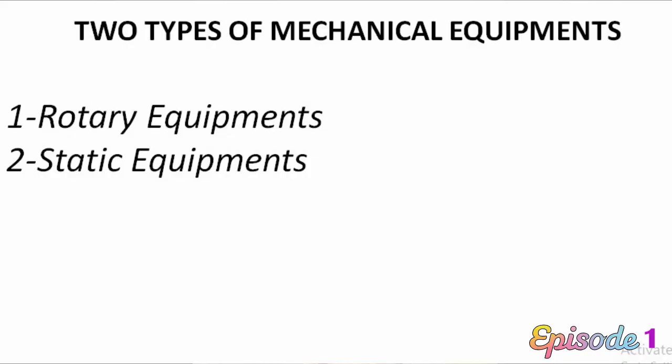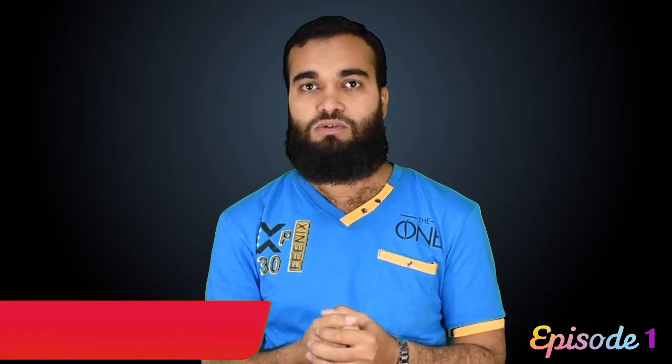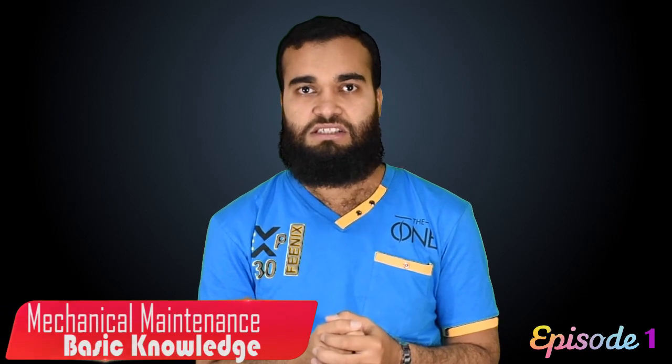There are two types of mechanical equipment: first, rotating equipment — also called rotary equipment — and the other is static equipment. These two categories of mechanical equipment are shown on the screen.